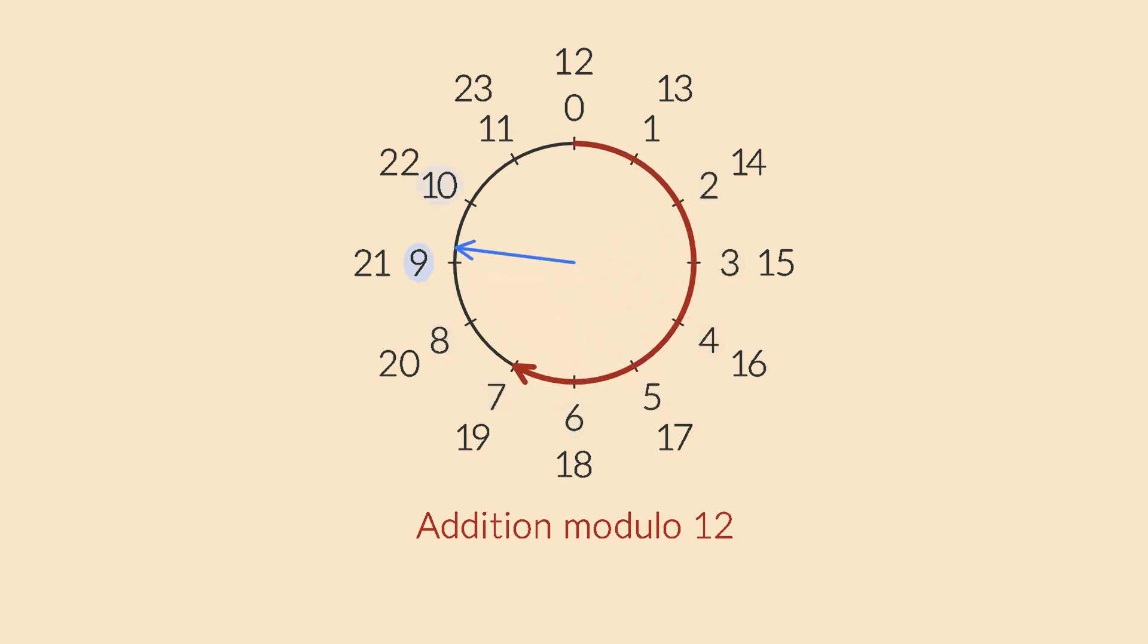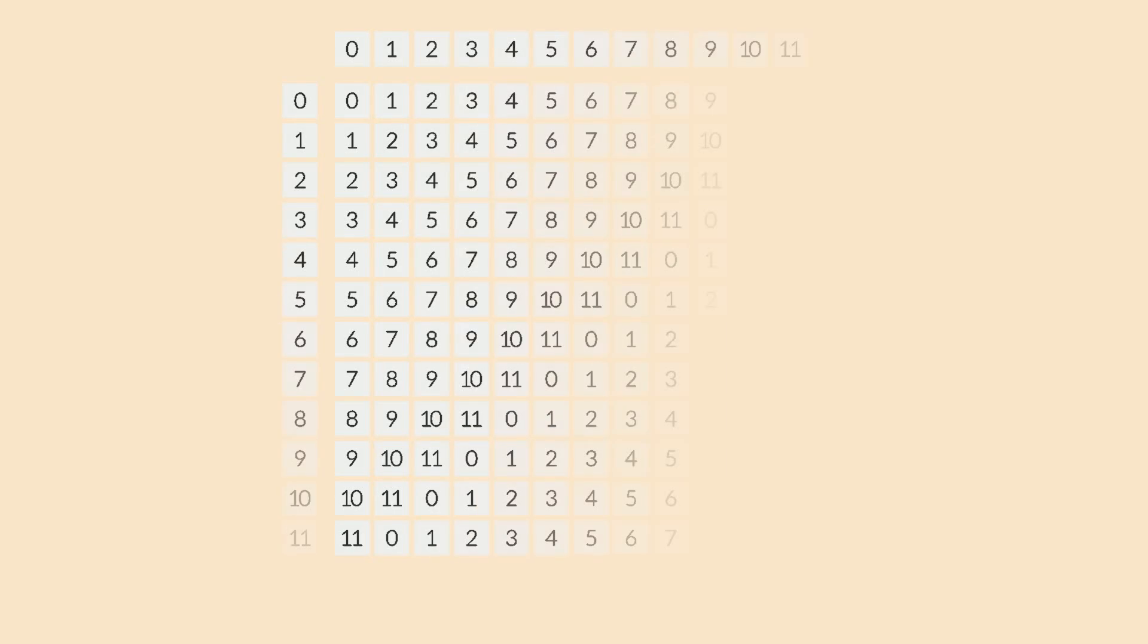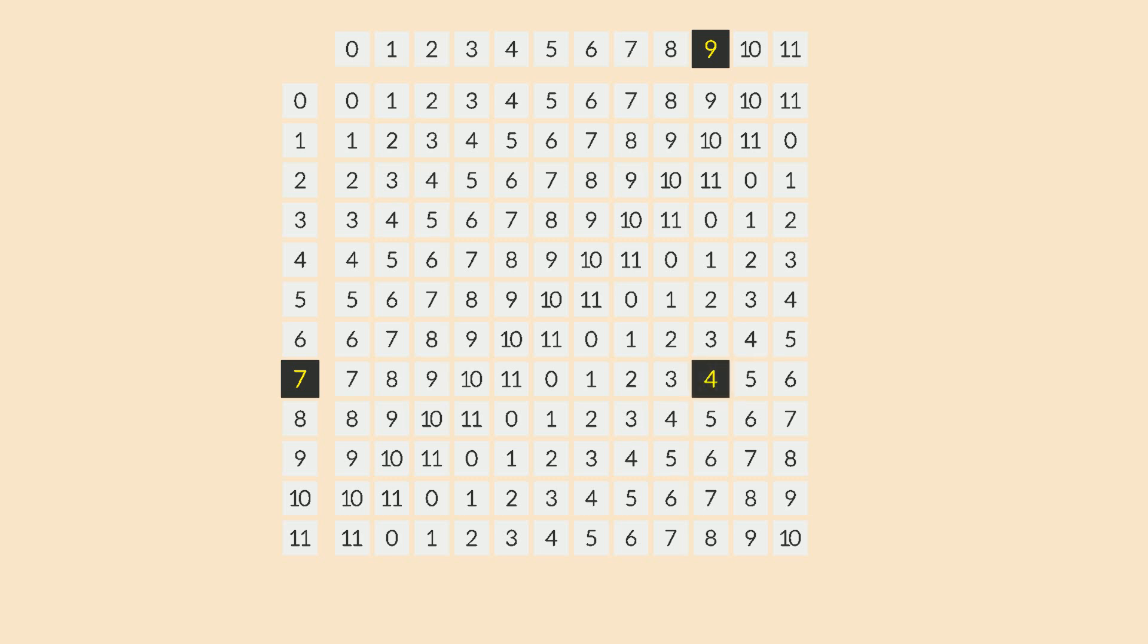you fall back down to 0. You can use this small number system to do addition and multiplication. When you calculate 7 plus 9, you get 16. But then you have to subtract 12 until you get a number lower than 12. So in addition modulo 12, 7 plus 9 is 4. Here's the addition table. You can quickly verify that 7 plus 9 indeed equals 4. 11 plus 1 equals 0. And 6 plus 6 also equals 0.